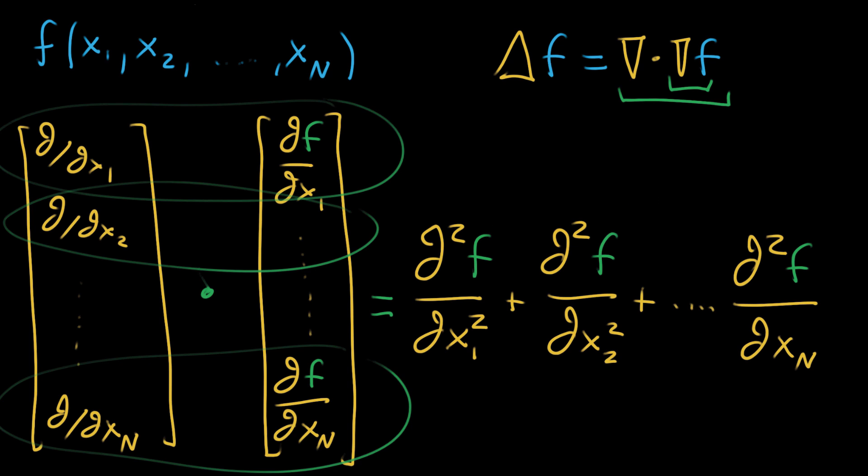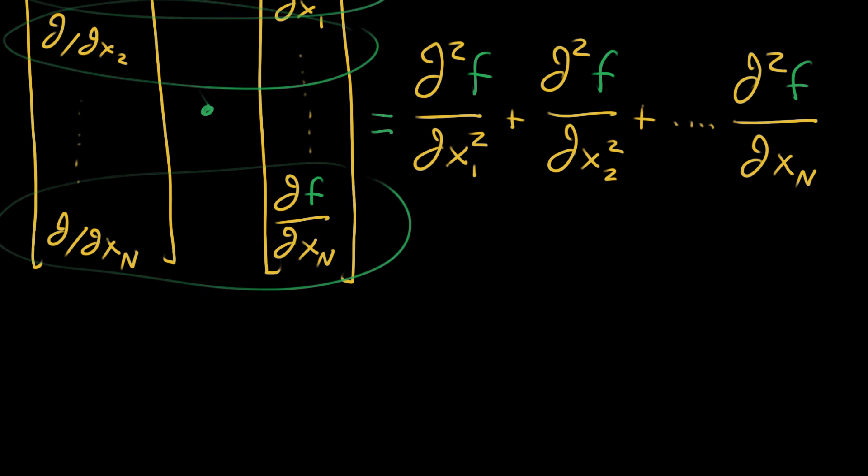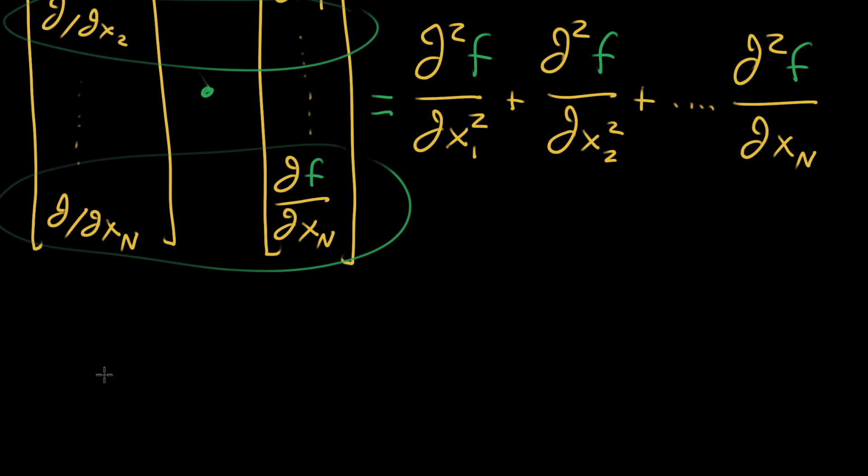This is another format in which you might see the Laplacian, and oftentimes it's written compactly. So people will say the Laplacian of your function f is equal to, and then using sigma notation, you'd say the sum from i equals one up to n of your second partial derivatives, partial squared of f with respect to that i-th variable.